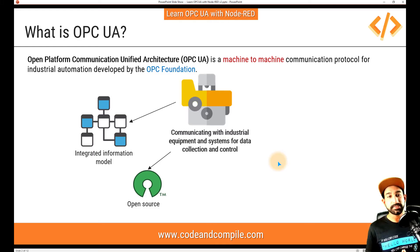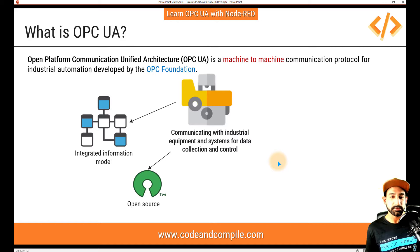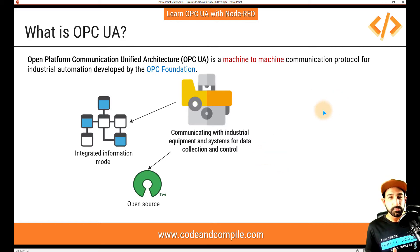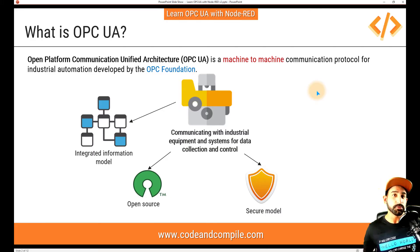The second feature is that OPC UA is open source. You can find open source OPC UA servers and clients which you can use, and you don't have to pay most of the time for these OPC UA-based clients. The third feature is a secure model — as mentioned, there is user authorization required to communicate with OPC UA servers, making it more secure compared to Modbus and other connections.